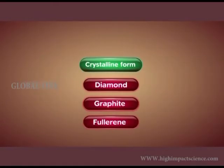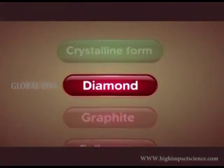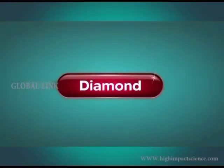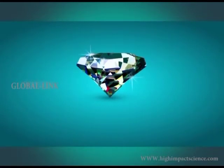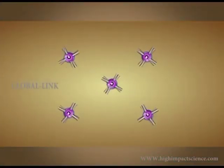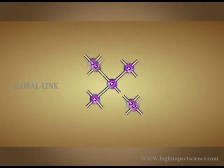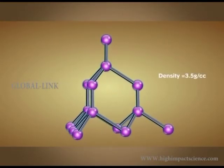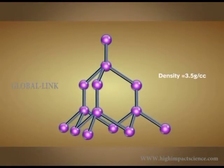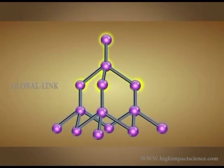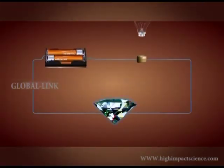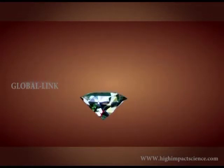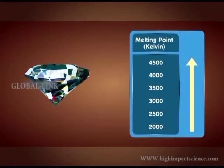Diamond is the hardest form of crystalline carbon. In diamond, each carbon atom is bonded to four other carbon atoms by covalent bonds, forming a rigid three-dimensional structure. Diamond's density is 3.5 grams per cubic centimeter. No electrons are available as they are all involved in bonding. Because of the absence of free electrons, diamond is a bad conductor of electricity. Diamond has a high melting point of 4000 Kelvin or more.